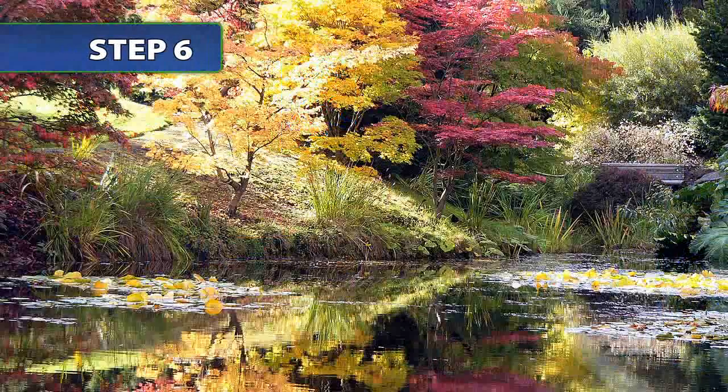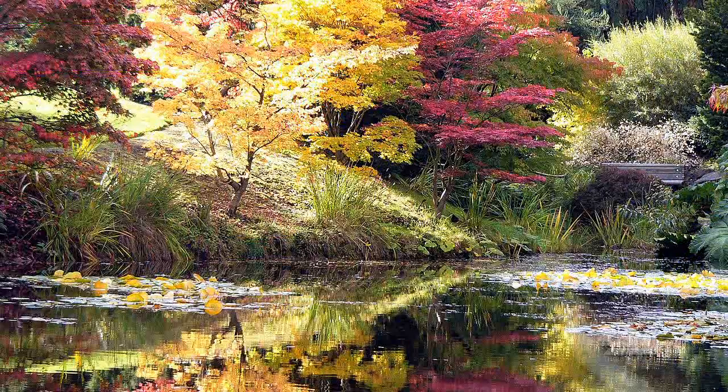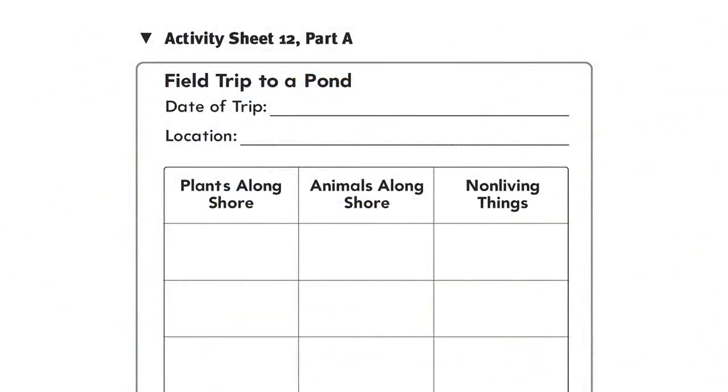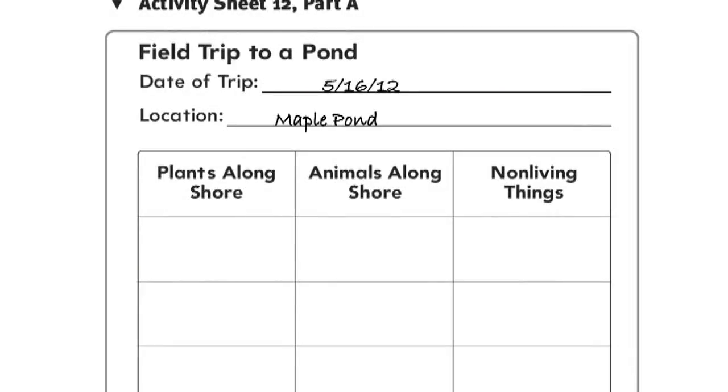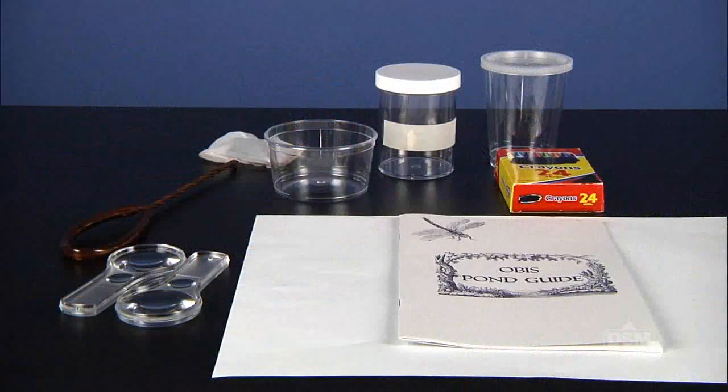To begin Session 2, remind students of the safety procedures and take the students to the site. Once there, point out harmful plants or areas you want students to avoid. Then distribute a copy of Activity Sheet 12, Part A to each student. Have students write the date and the name of the pond they are visiting on the top of the sheet.